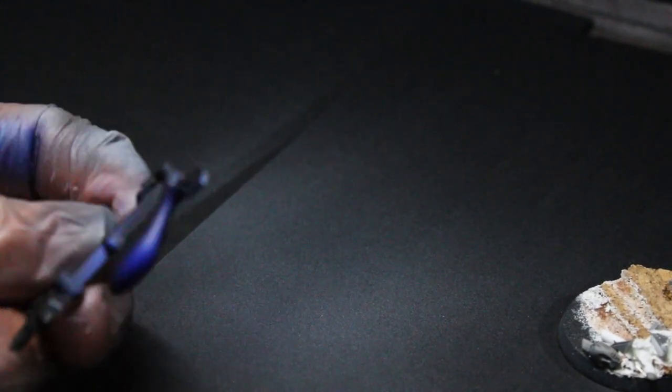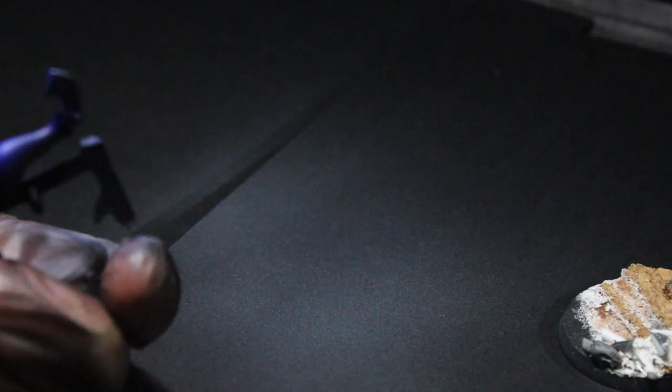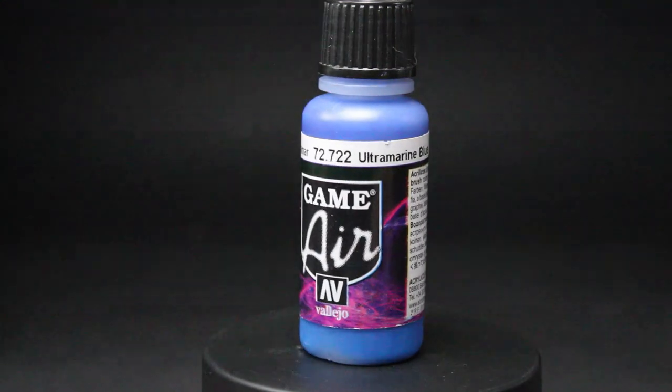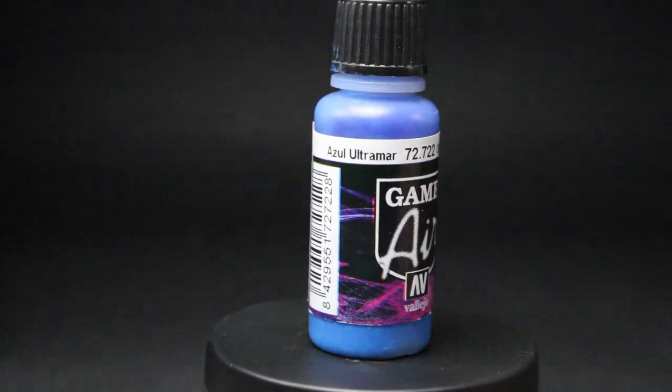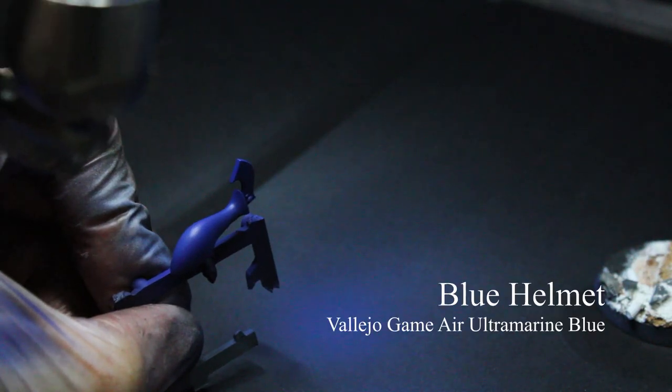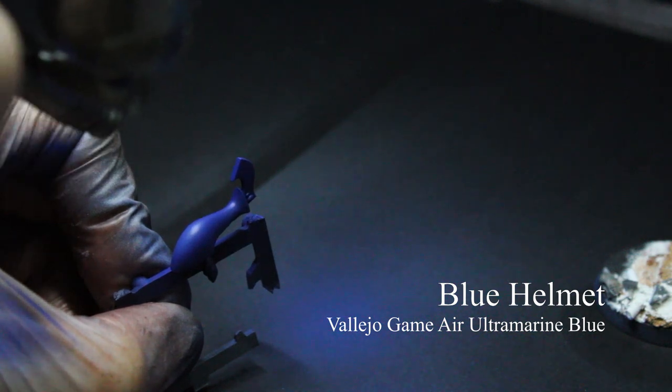Next, we'll prepare the helmets using a little thinner and flow improver mixed with Vallejo Game Air Imperial Blue. Next, we'll apply a layer of thinned and flowing Ultramarine Blue from Vallejo Game Air.